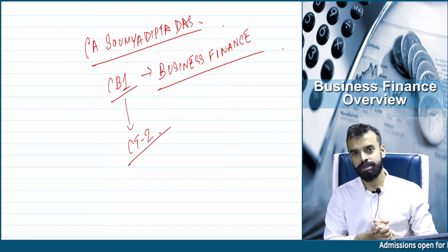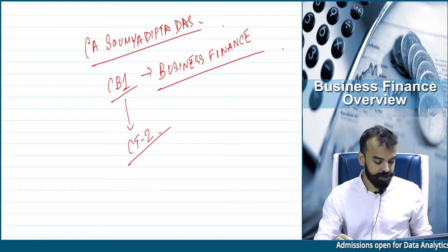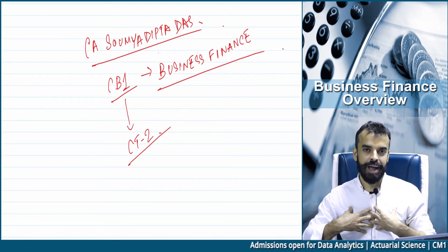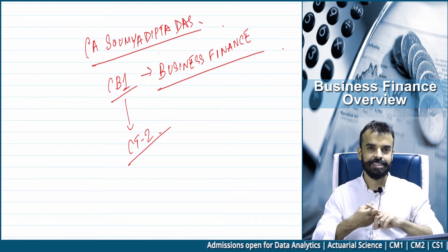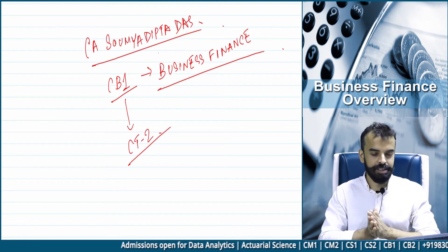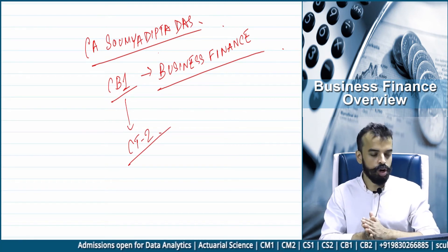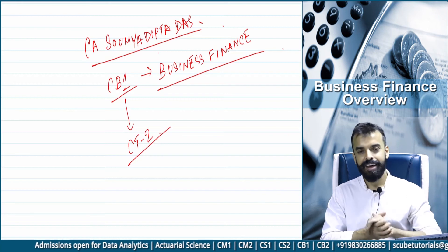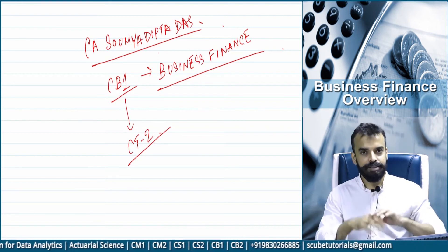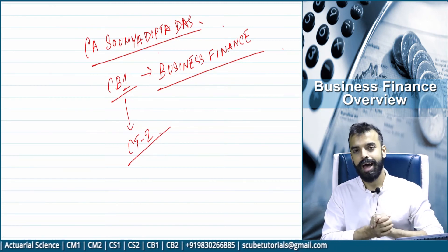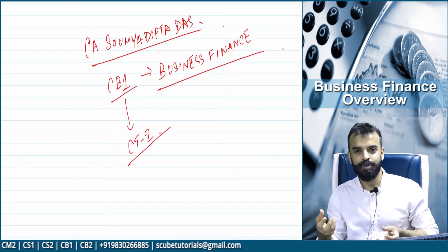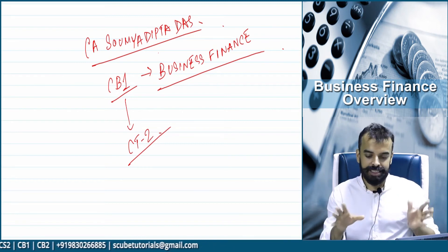I am a practicing CA. I have done CS, IFRS, and related qualifications, and I am a teacher of business finance. I used to teach CT2 for a long time, and now I teach CB1. I have introduced you to what this paper purports to do and compared CB1 with the erstwhile CT2, so you now have an idea of the syllabus.